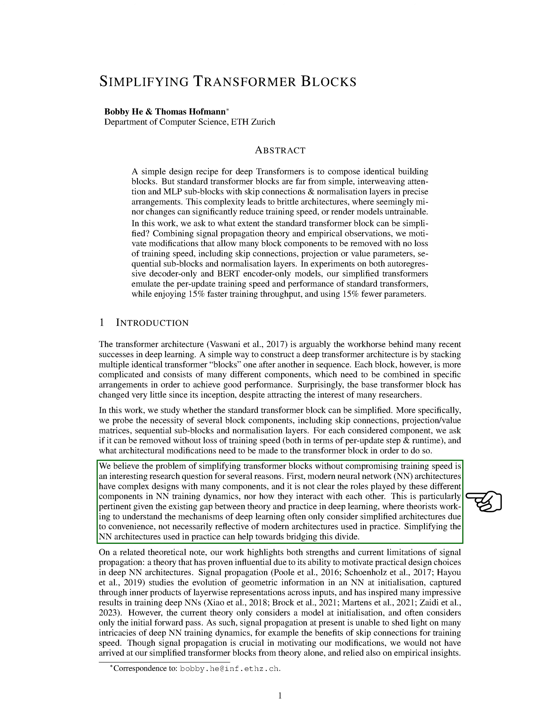We believe that simplifying transformer blocks without compromising training speed is an intriguing research question for several reasons. Firstly, modern neural network architectures are complex, with many components, and it's not clear how these different components affect the training dynamics of the neural network, or how they interact with each other. This is particularly relevant given the existing gap between theory and practice in deep learning. Simplifying the neural network architectures used in practice can help bridge this gap.